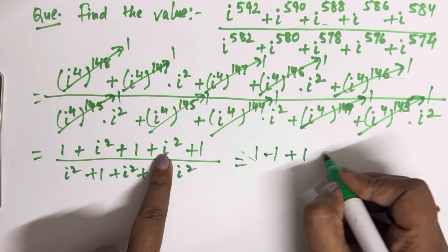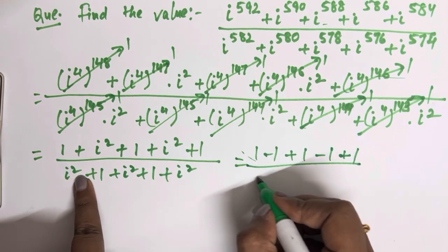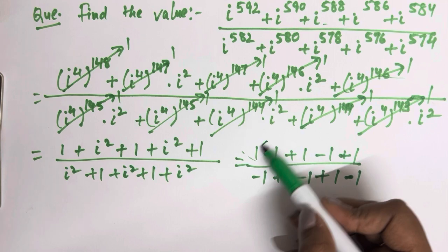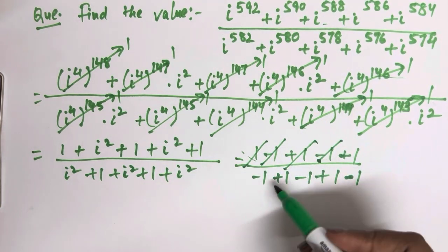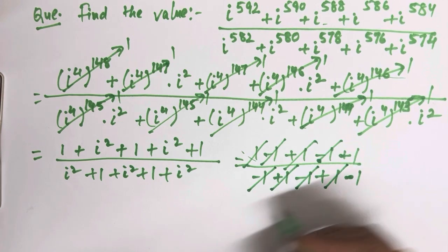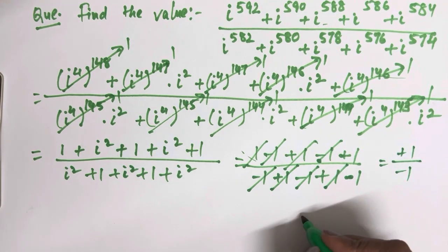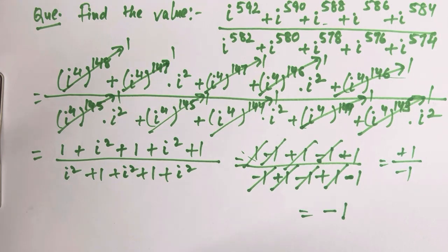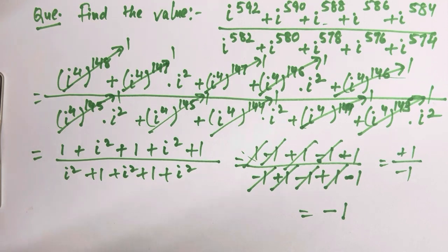Iota square is minus 1, so each iota square term becomes minus 1, and each '1' term is plus 1. The plus 1 and minus 1 terms cancel out in pairs throughout the expression. We are left with minus 1 divided by... that equals minus 1. So the value of this overall expression is minus 1. That was the second question. In the next video, we will discuss complex numbers — the real and imaginary parts, equality, and how we do addition, subtraction, multiplication and division of complex numbers. That's it for this video — thank you so much for watching.